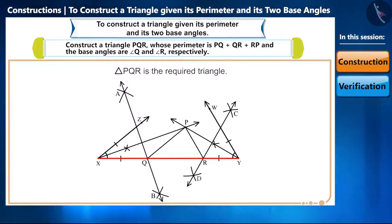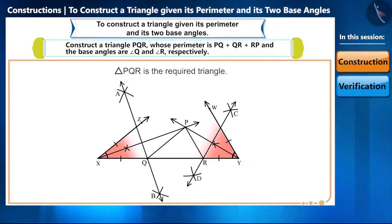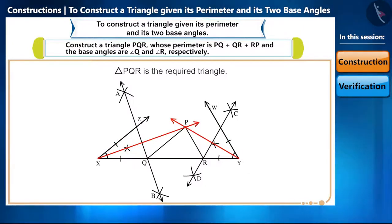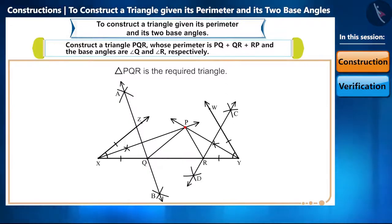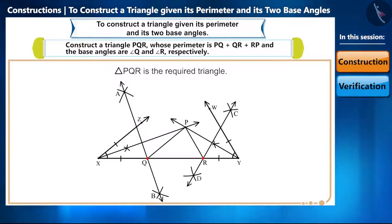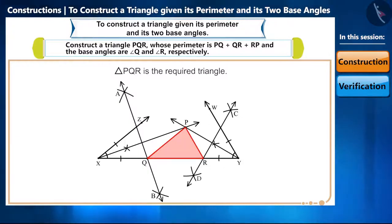To summarize the steps of this construction: by drawing a line segment equal to the perimeter, we draw the angle bisectors of the given angles and then construct perpendicular bisectors. We find one vertex of the triangle at the intersection point of the angle bisectors, and we get the remaining two vertices by the intersection of the base and both perpendicular bisectors.